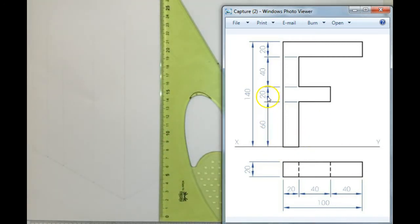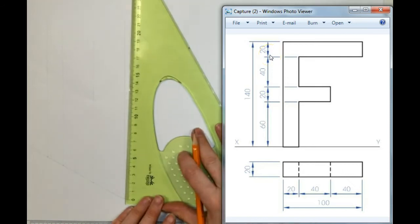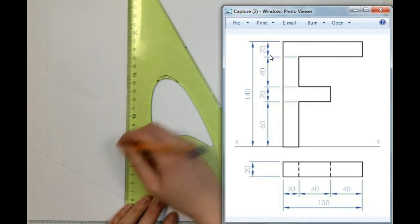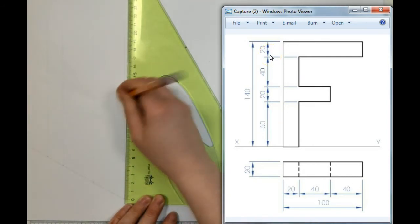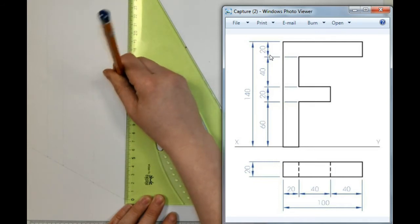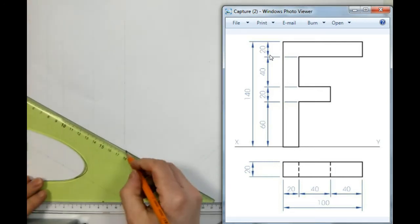For the heights, I'm going to go 60, 20, 40, and 20. From each of these points, I'm going to go back at 30 degrees.